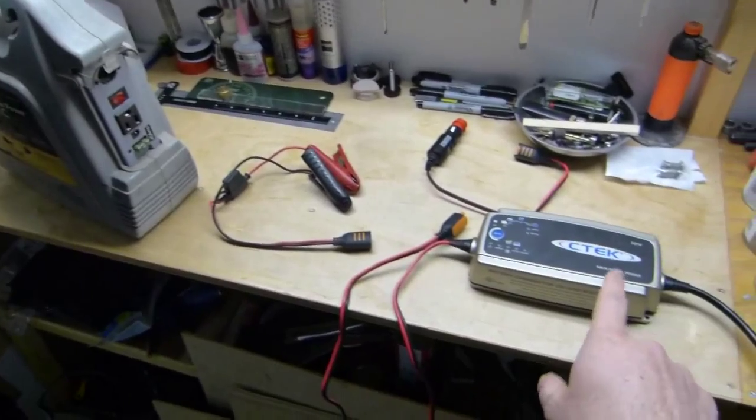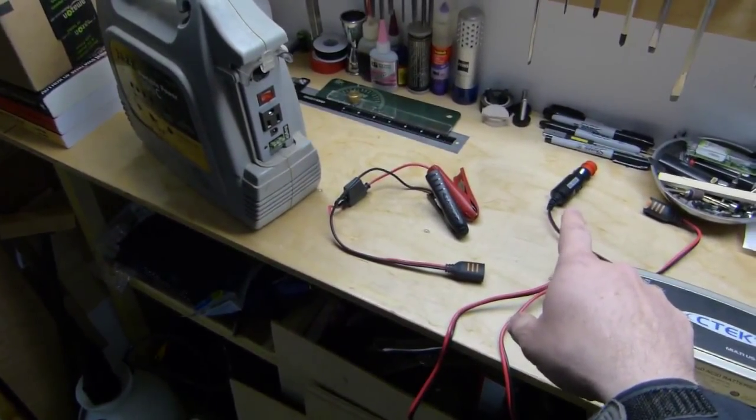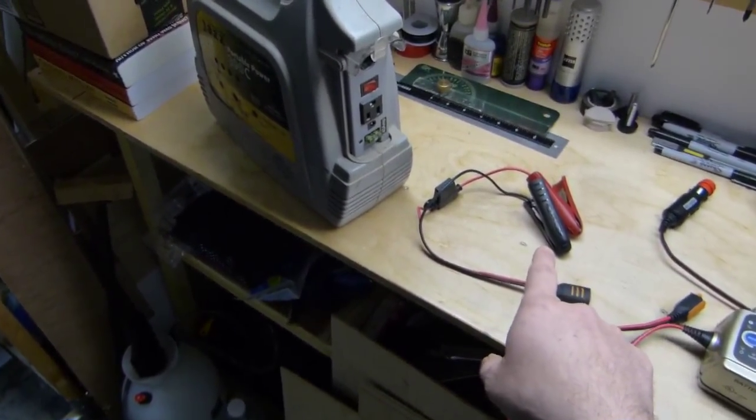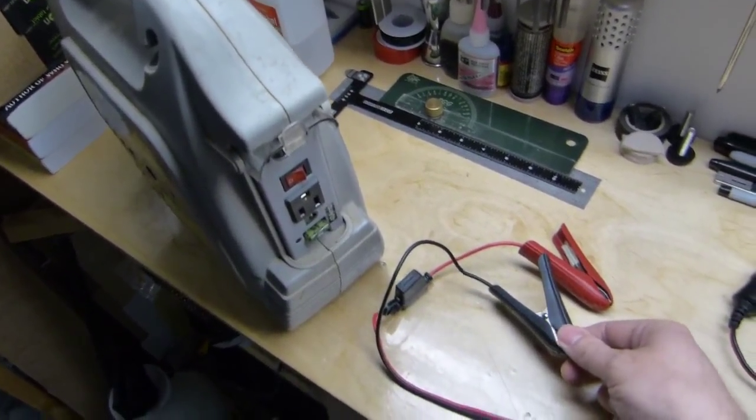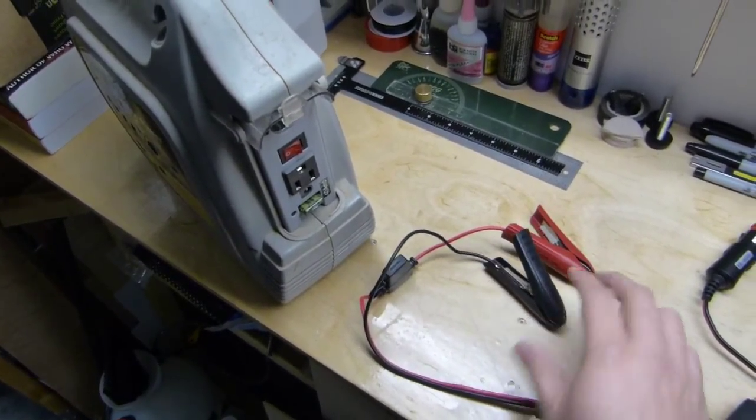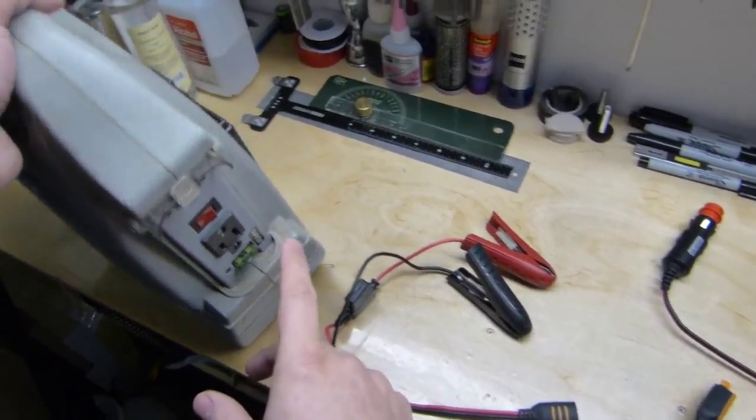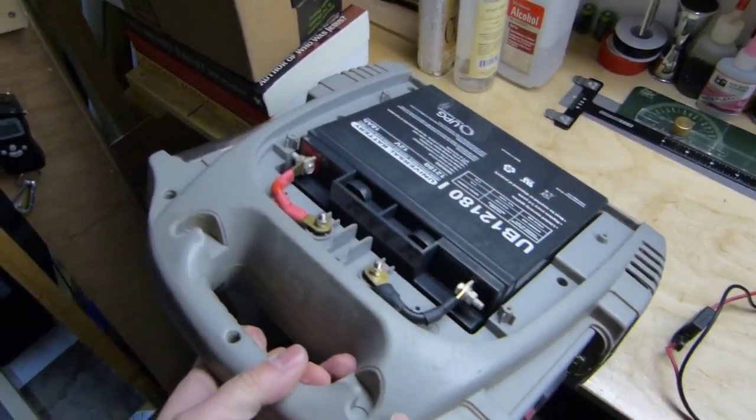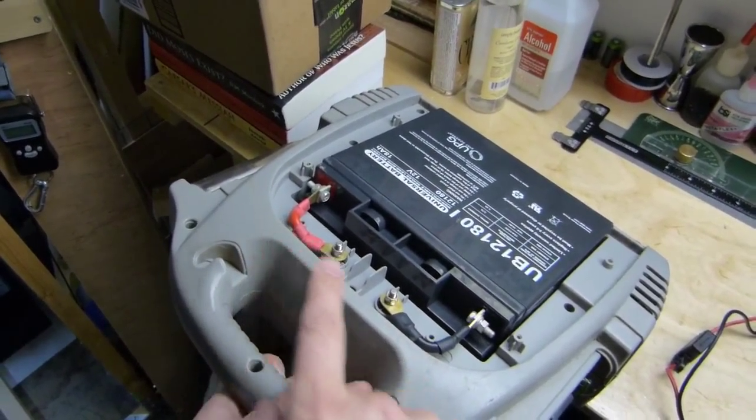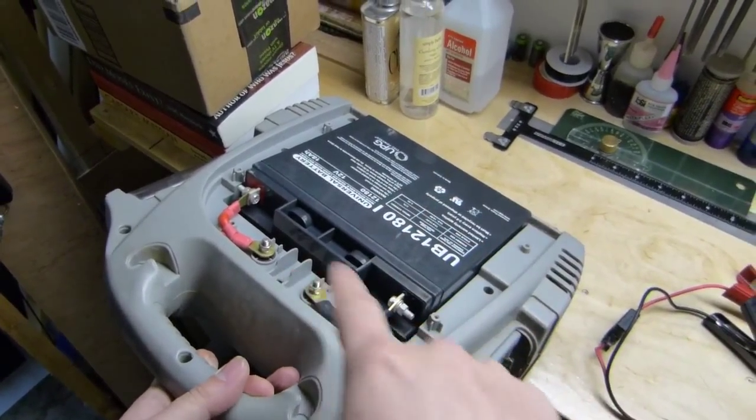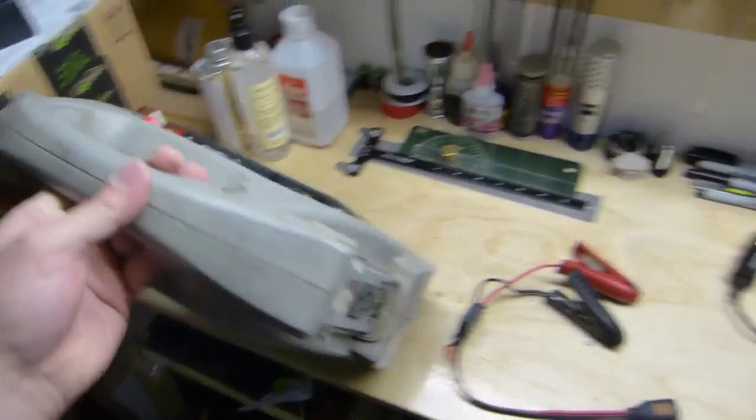Now, if for some reason you do not have a little charger that has that kind of adapter, you have to use regular clips like this, regular battery clips on a normal battery charger. Take off the rear cover and hook up to your positive and negative directly. Just clamp right on there and charge it up that way, put the cover back on.